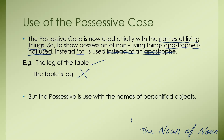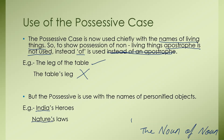But the possessive is used with the names of personified objects. For example, 'India's heroes' — here the word 'India' is a non-living thing, yet we are using apostrophe S because it is a personified object. Another example: 'Nature's laws' — here too, nature is a personified object.